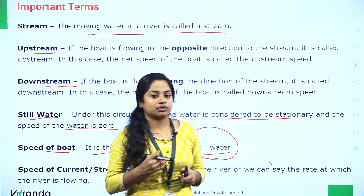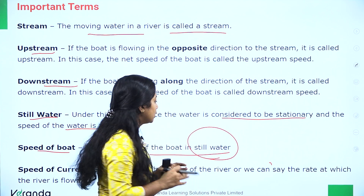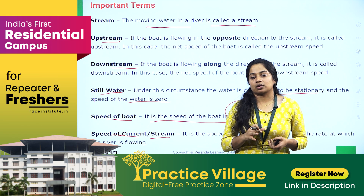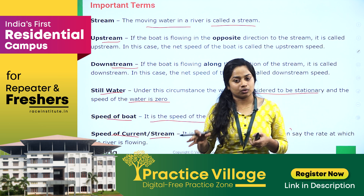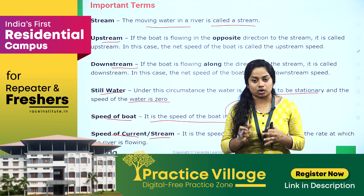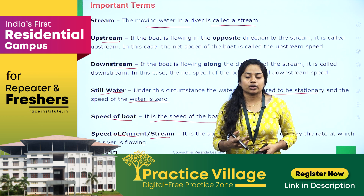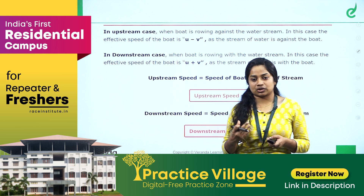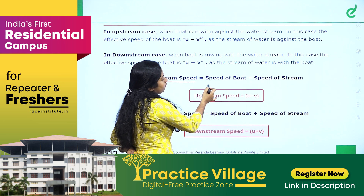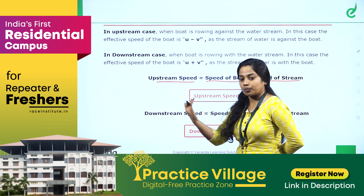The speed of current is the speed of the stream — it is the flow of the river. We use these terms as basics when studying Boat and Stream. The important cases are upstream and downstream.